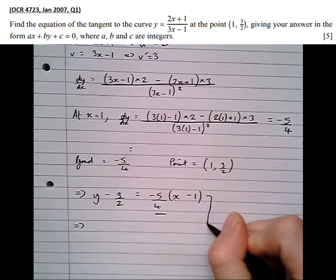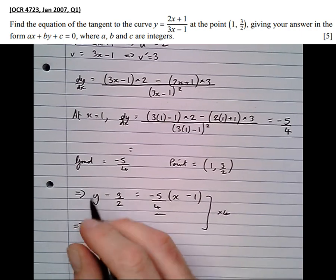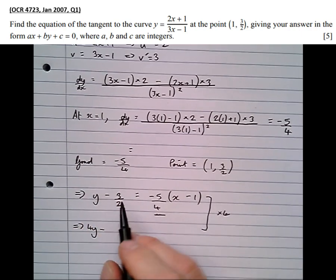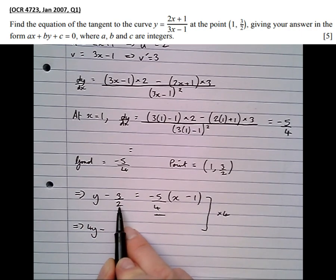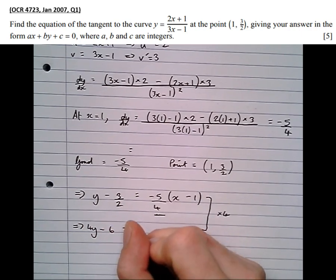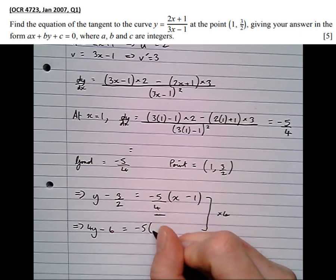So to get from this line to this line, I'm going to times by 4, to give 4y minus, well, 4 times 3 is 12, over 2 is 6, equals minus 5(x minus 1).